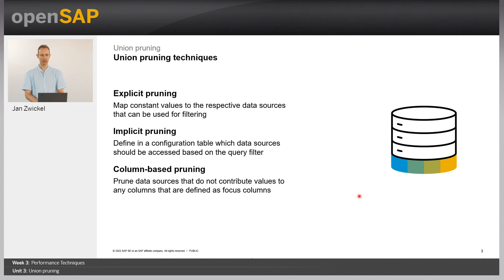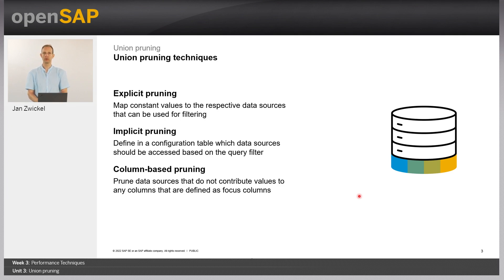Implicit pruning is pretty similar to explicit pruning, but here you use a configuration table. This configuration table defines, based on how the filter looks in the query, which sources are relevant. And with column-based pruning, you define certain columns of being of interest, and if a data source does not provide a value for this column, then this data source is pruned away. Let's have a look in more detail.